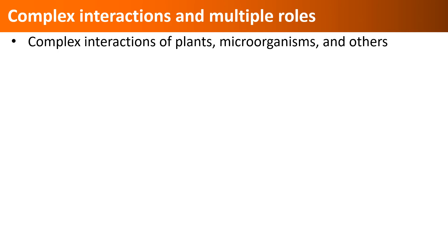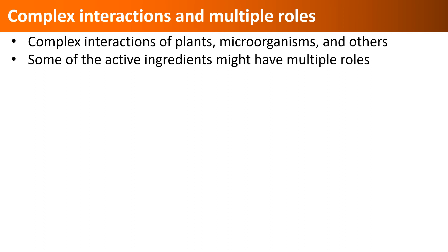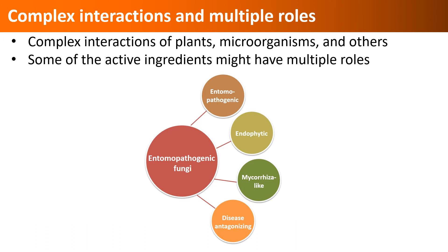We know that interactions among plants, beneficial and harmful microorganisms in the soil or on plants, pests, natural enemies, other organisms, and various environmental factors are very complex and are influenced by each other and also by economic practices. Some biologically active ingredients also have multiple roles as biostimulants or biopesticides. For example, entomopathogenic fungi, which are primarily known for controlling arthropod pests, also promote plant growth and improve nutrient and water intake.